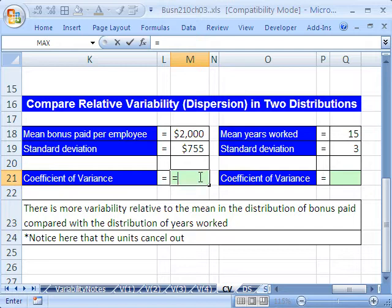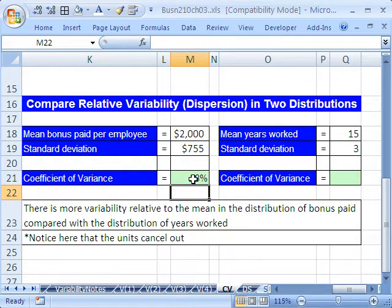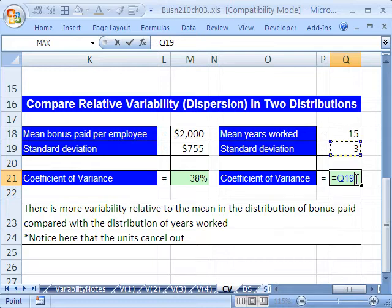Since we're taking standard deviation divided by mean, it will give us the amount of standard deviation for every one unit of our mean. And it will get rid of the great differences in values, and it will also get rid of the units. Equals, and we take our standard deviation divided by our mean. I pre-formatted that as a percent. So we see 38% here. We get our standard deviation divided by our mean and we get 20%. There's more variability relative to the mean in the distribution of bonus paid as compared to the distribution of years worked.